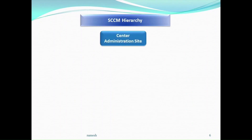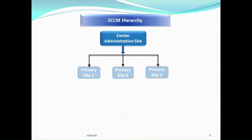SEM hierarchy. Central administration site can support up to 8,25,000 systems. CAS can support primary sites like 1, 2, 3 — up to 25 primary sites can be supported.